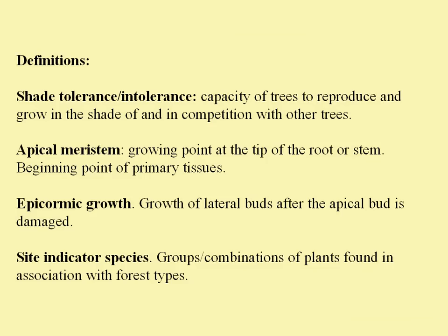Apical meristem is the actual growing point at the tip of a root or the tip of a stem, and that's the beginning point of any of the primary tissues. Sometimes you see trees with what is called epicormic growth — those are outgrowths of shoots that occur after the apical bud or growing bud is damaged. Some trees are able to send out other shoots to compensate, and that's called epicormic growth.